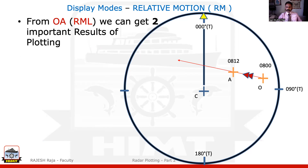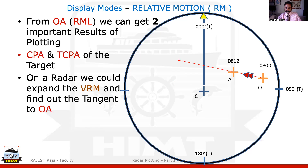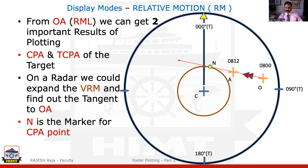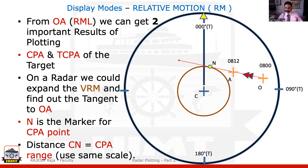From the RML we can get two important results in plotting — the most important results you need before starting anything regarding collision avoidance or radar plotting — and they are CPA and TCPA. If you had a live ARPA radar, you could open the VRM and make it tangent to this vector, and that VRM distance automatically gives you the CPA. But since we don't have VRM here on the plotting sheet, we identify the tangent point and call it November. N is the marker for the CPA point, and the distance from Charlie to November is the CPA range. That is the first data I'm asking for regarding CPA.